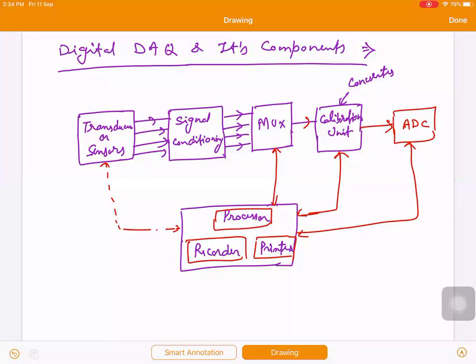Like transducer or sensors, you guys know for sensing physical quantity we use sensor and transducer. Next one is signal conditioning. Means suppose your output will get output.